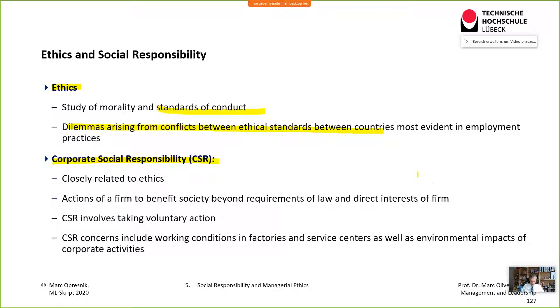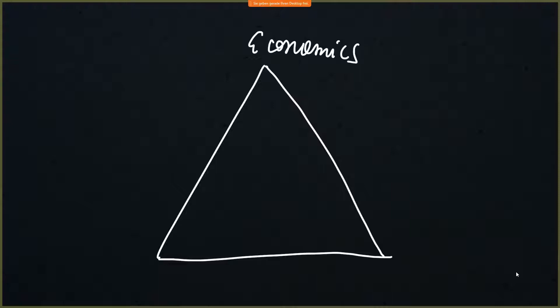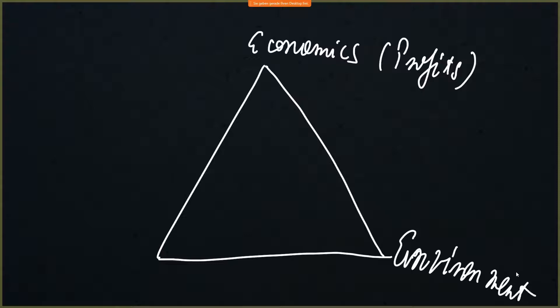There's sometimes a dilemma because every kind of organization is basically torn between three aspects — conflicting but interrelated goals. You cannot accomplish every dimension to the same extent at the same time. One is economics: profitability, turnover, liquidity, return on investment. Then we have environment: resourcefulness, avoidance of waste, avoidance of pollution. And then we have the social factors: employee satisfaction.